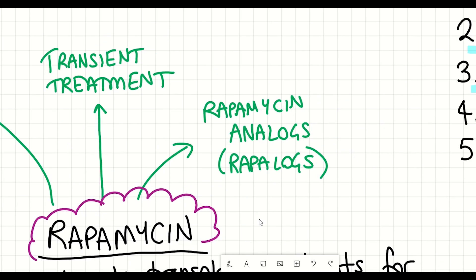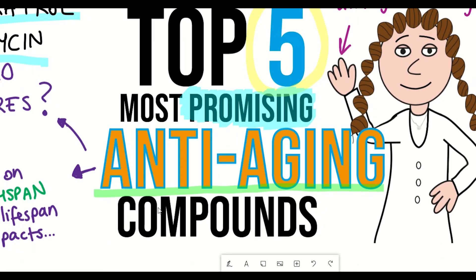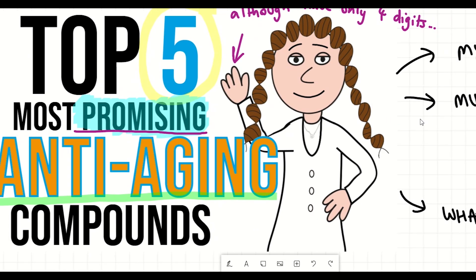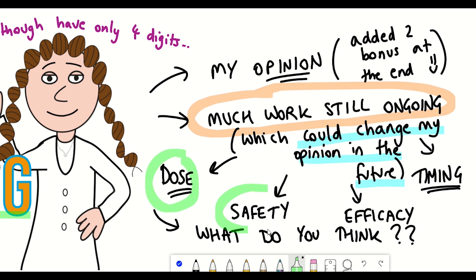So these are my top five promising anti-aging compounds. And to reiterate what I said earlier, they are only my most promising because there is still much work to be done in terms of finding the right dose in terms of efficacy, but also safety, and also a better understanding of the timing of when these different compounds should be taken. And these are just my opinions, not advice.